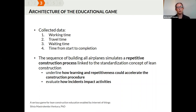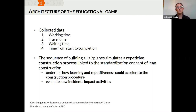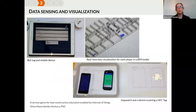The data we wanted to evaluate included: working time — the time each player spent at the workstation performing construction sequences; travel time — time needed to move from warehouse to workstation; waiting time — time spent waiting for the previous player to return before going to their workstation; and total time from start to completion of all six airplanes per round. The sequence of building all six airplanes simulates a repetitive construction process linked to the standardization concept of lean construction, allowing us to evaluate how learning and repeatedness could accelerate construction and how unexpected events impact construction activities.